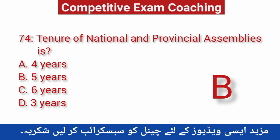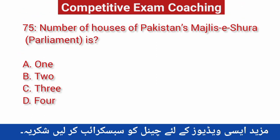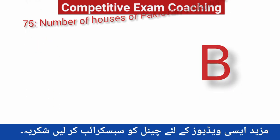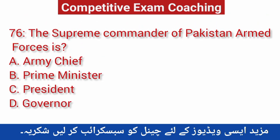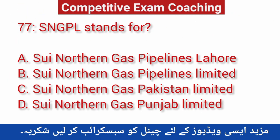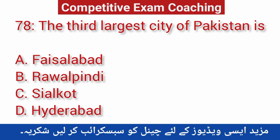Question number seventy-four: Tenure of national and provincial assemblies is? Correct answer is B — 5 years. Question number seventy-five: Number of houses of Pakistan's Majlis-e-Shoora or parliament is? Correct answer is 2. Question number seventy-six: The Supreme Commander of Pakistan Armed Forces is? Correct answer is C — President. Question number seventy-seven: SNGPL stands for? Correct answer is B — Sui Northern Gas Pipeline Limited. Question number seventy-eight: The third largest city of Pakistan is? Correct answer is A — Faisalabad.